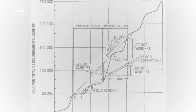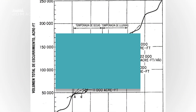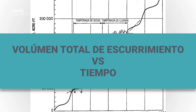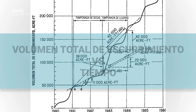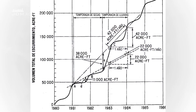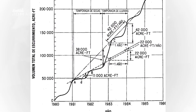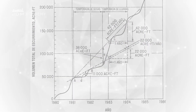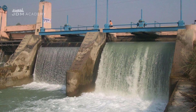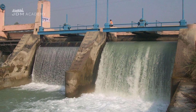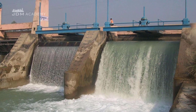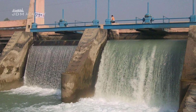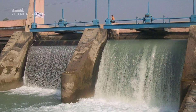The mass diagram is a graph of total accumulated runoff volume against time. The slope of the curve is the mean flow rate or circulation volume. The selection of a critical period of several years' duration on a mass curve depends on the function of the reservoir.